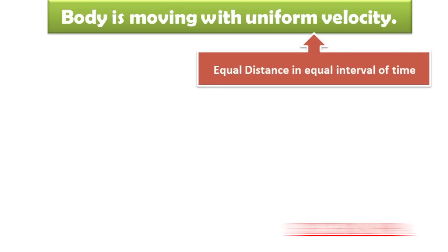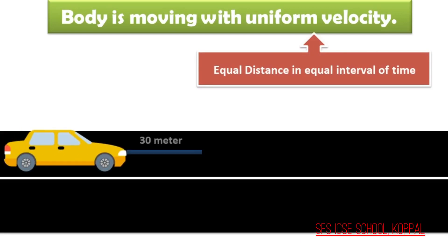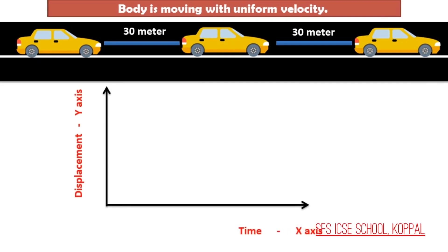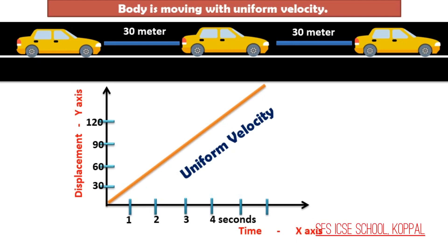Second type: when the body is moving with uniform velocity. In uniform velocity, a body travels equal distance in equal intervals of time. For example, a car moving 30 meters in 1 second, again 30 meters in the next second, and again 30 meters in the following second. If we plot a displacement-time graph — with time on the x-axis and displacement on the y-axis — at 1 second: 30 meters, at 2 seconds: 60 meters, at 3 seconds: 90 meters, and so on. The displacement-time graph is a straight line inclined to the time axis.